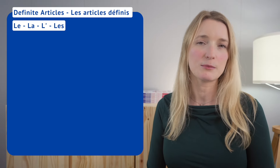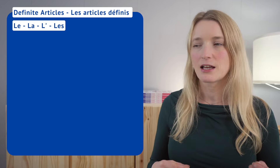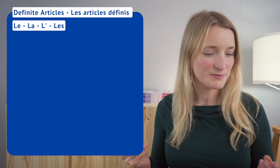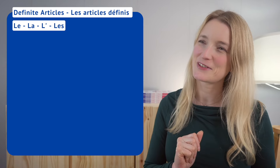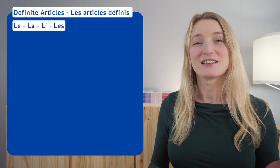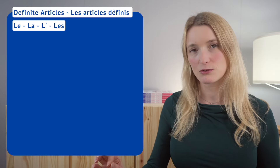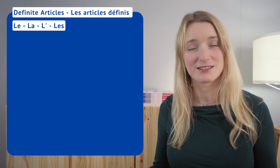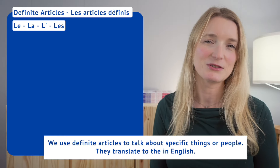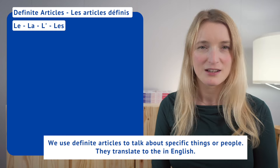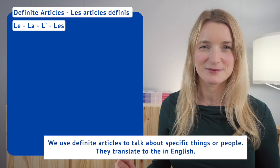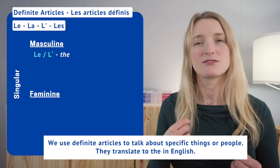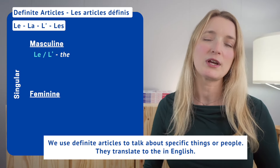The second type are the definite articles — les articles définis: le, la, l'apostrophe, les. They're quite easy to use, but they do have very specific cases where they are not used the same as in English. In English most of the time you won't use them when in French we do. We use definite articles to talk about specific things or people — they translate to 'the' in English.